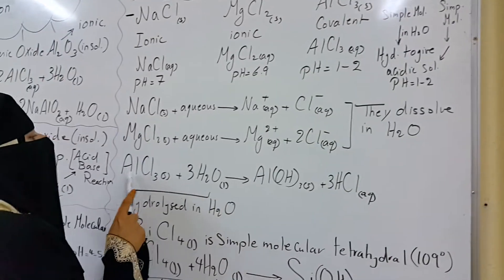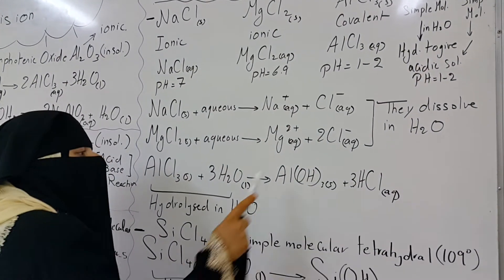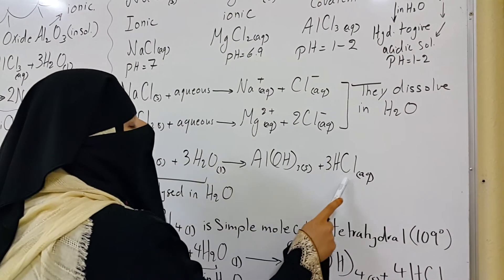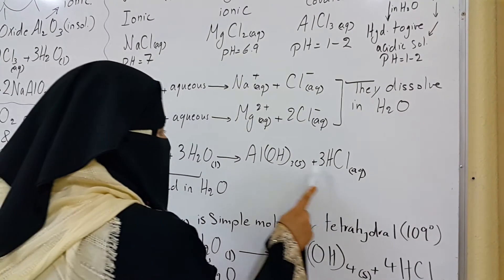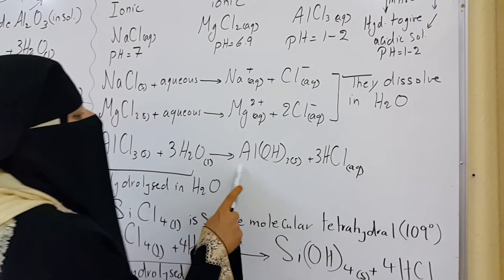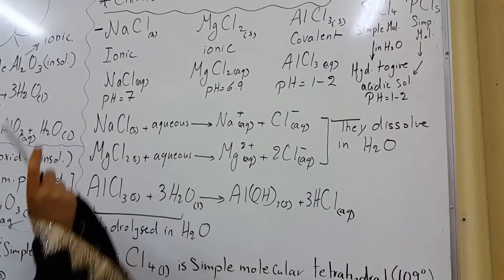But once we put aluminum chloride in water, it is hydrolyzed in water to form aluminum hydroxide solid plus HCl, strongly acidic solution of pH 1 to 2. Remember, aluminum hydroxide is insoluble in water, and it has amphoteric properties like the oxide of aluminum.